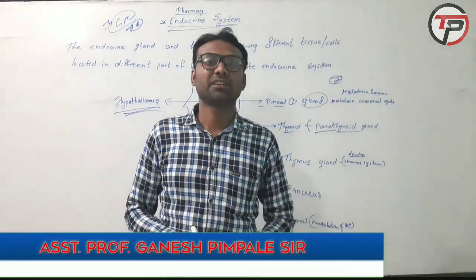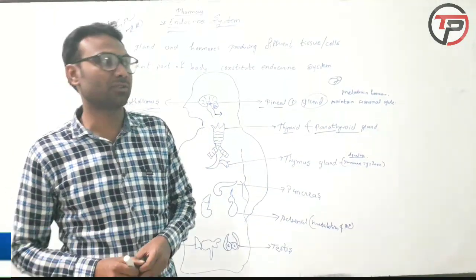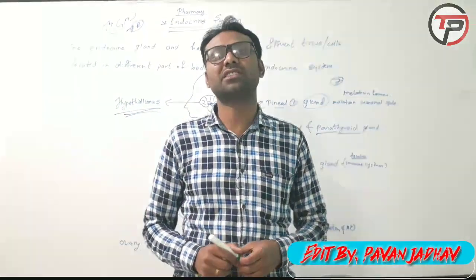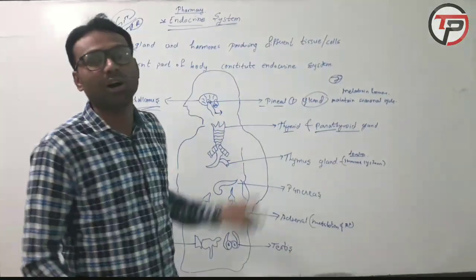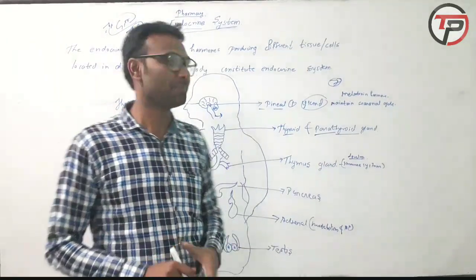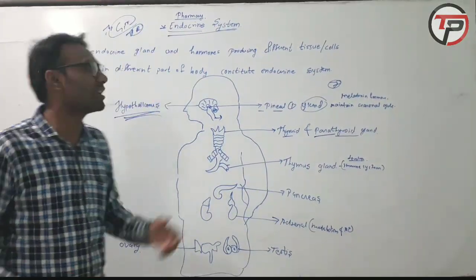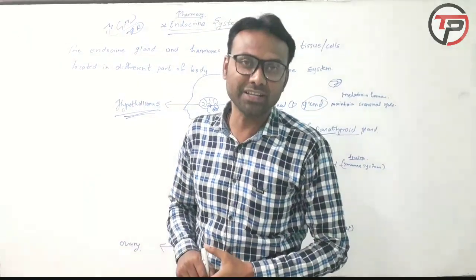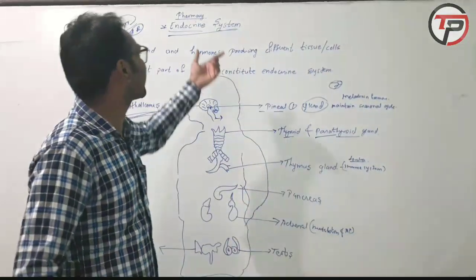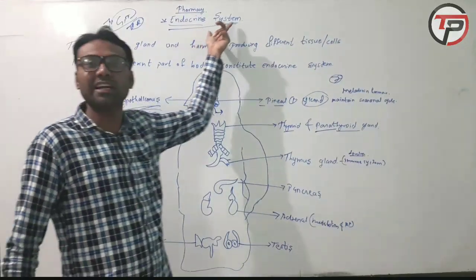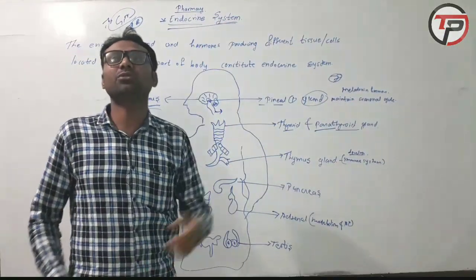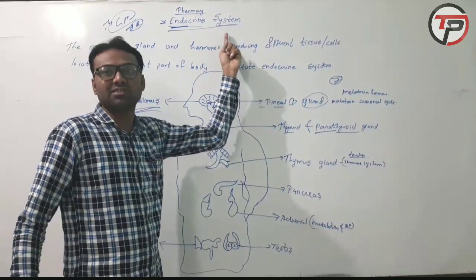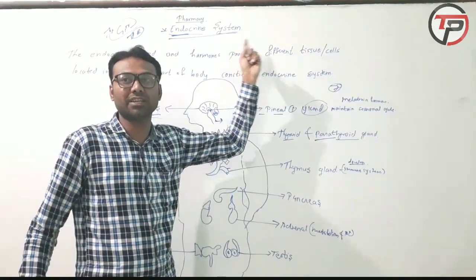Hi friends, myself Ganesh Pimple, working as an assistant professor at pharmacology. As we are learning in pharmacy, pharmacognosy is a branch of science that deals with the study of all crude drugs. It is essential to know all the systems related to human anatomy and physiology. The endocrine system is one of the systems of our body — there are 12 or more systems working simultaneously together.